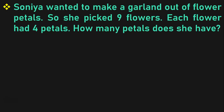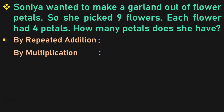Let us go to the next sum now. We are going to solve by repeated addition and by multiplication. Sonia wanted to make a garland out of flower petals for which she picked 9 flowers, and each flower had 4 petals. So to find the total number of petals, we should add 4, 9 times: 4 plus 4 plus 4 plus 4 plus 4 plus 4 plus 4 plus 4 plus 4. When you add 4 nine times, you get the answer to be 36.